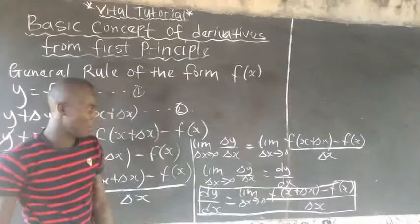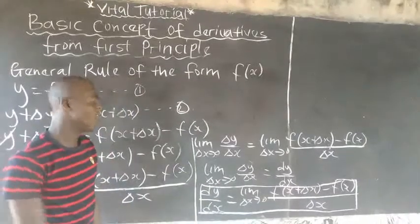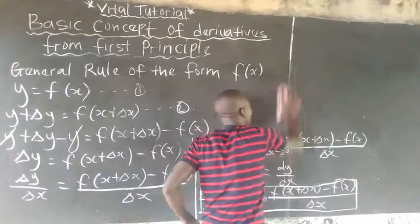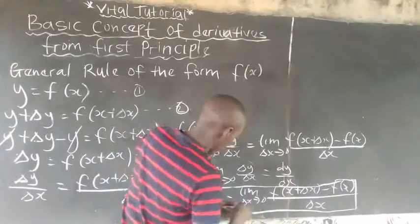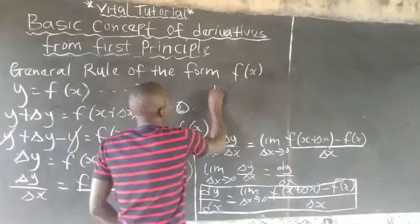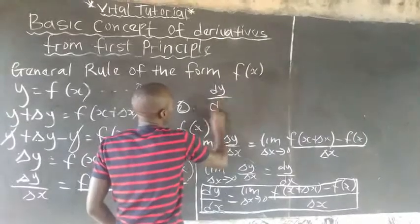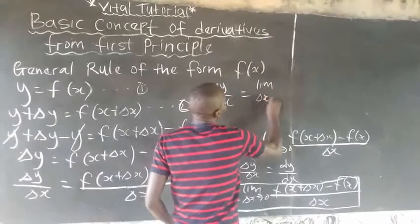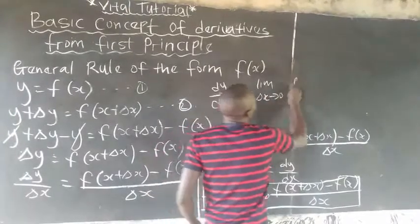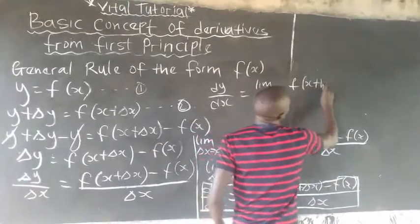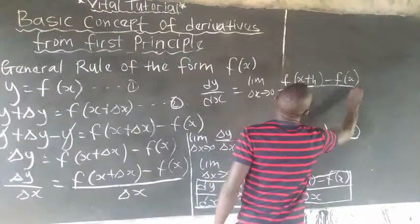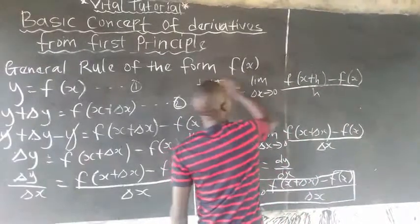And in some textbooks or some lectures, you may see this as dy/dx equals to the limit as change in s is approaching zero of f(s plus h) minus f(s) everything over h. It is also correct, it's the same thing.